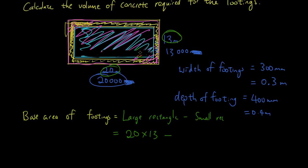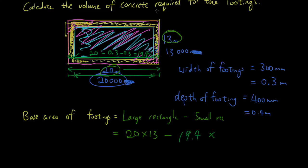Now for the inner rectangle dimensions: the inner length is 20 minus 0.3 (for one side) minus 0.3 (for the other side), giving 19.4 meters. Similarly, the inner width is 13 minus 0.3 minus 0.3, which is 13 minus 0.6, giving 12.4 meters.